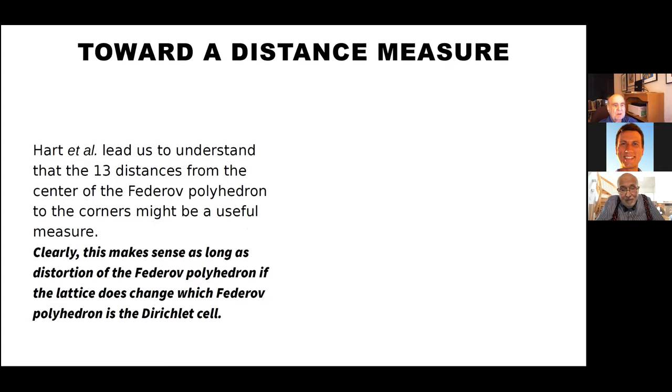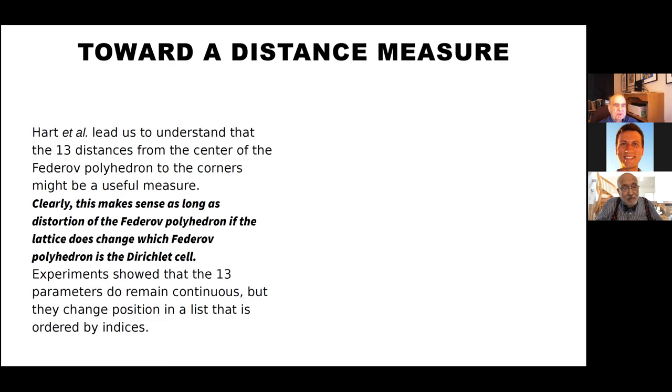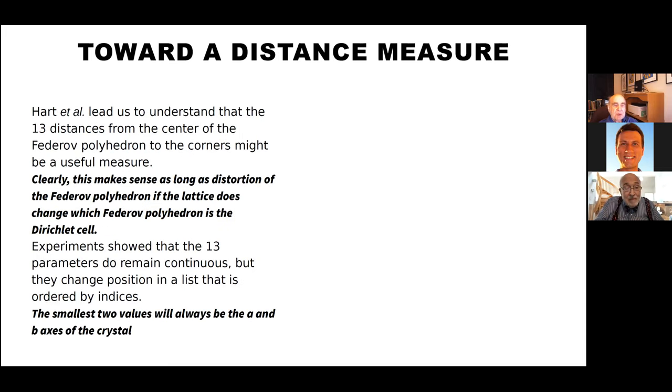This makes sense as a distance measure as long as you don't cross through a boundary and change what Fedorov polyhedron you're in. We did some experiments, and the 13 parameters do remain continuous, but they change position in a list if you list them. For instance, you might say, 'I want 1,0,0 first and 0,1,0 and then 0,0,1, then 1,1,0, etc.' In that way it would not remain continuous. You do know that the smallest two values will always represent the lengths of the a and b axes of the crystal. That's guaranteed. And the c will always be one of the smallest seven values. That's useful but not complete.